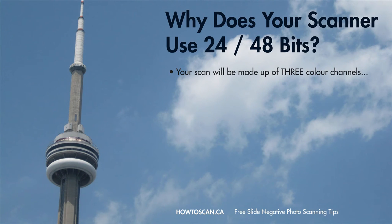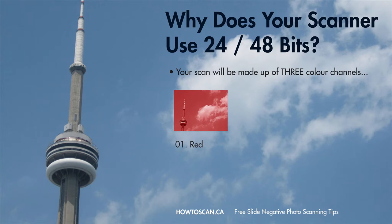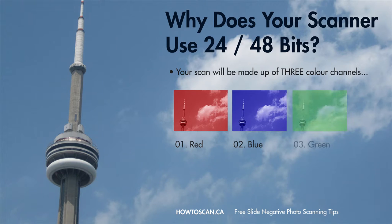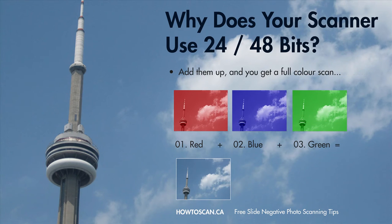Let me show you an example of how 48 or 24 bits have nothing to do with DPI and everything to do with color. Your digital photos are made up of three channels: channel 1 is red, channel 2 is blue, and channel 3 is green. When you put all three channels together, you get your complete image. When you add channels 1, 2, and 3, you get a full colored image.